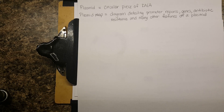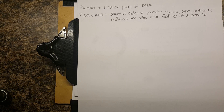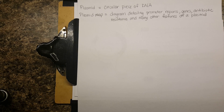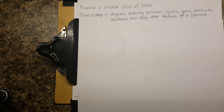The first objective involves a simple plasmid map, but first you need to know what a plasmid is. A plasmid is just a circular piece of DNA — it's usually double-stranded. A plasmid map is a diagram that details the promoters, genes, antibiotic resistance, and all the other features of a plasmid, including how big it is.